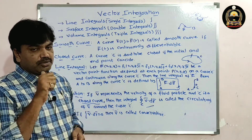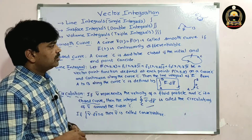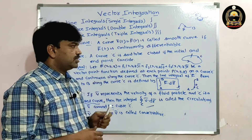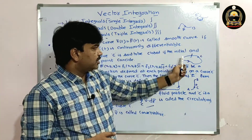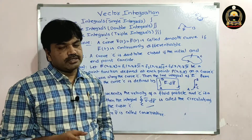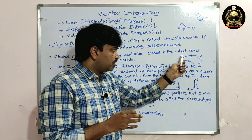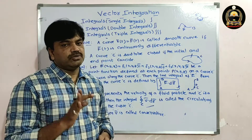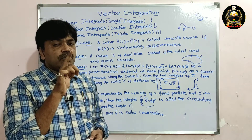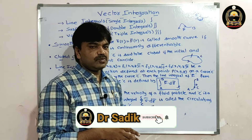Another very important definition: closed curve. A curve C is said to be closed if the initial and end points coincide. Suppose you take a curve C where the initial and end points coincide — such curves are called closed curves. A closed curve has no distinct end point.